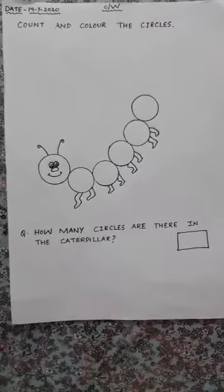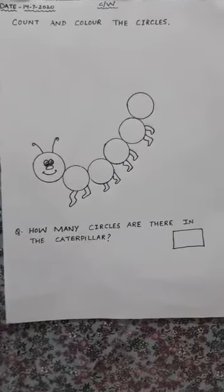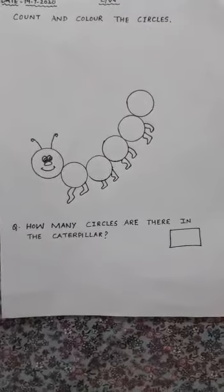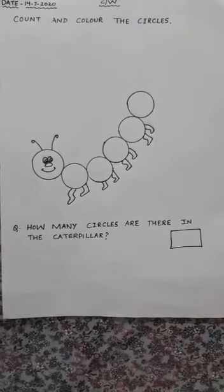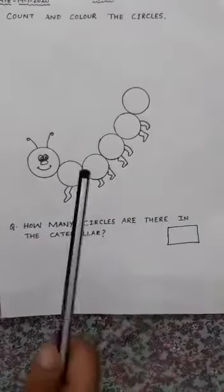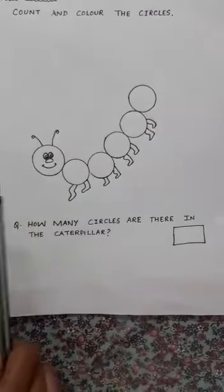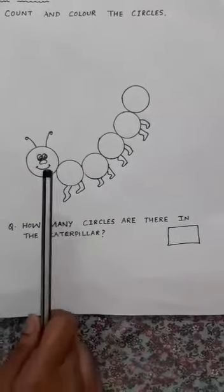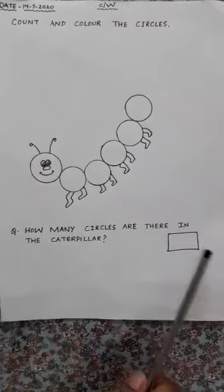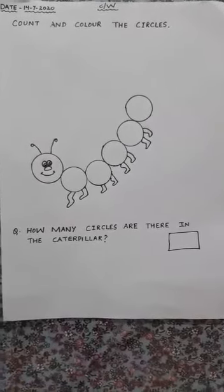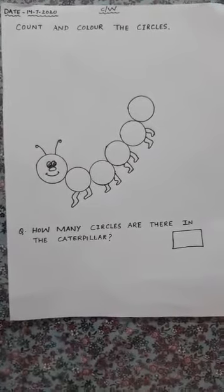और फिर क्या करोगे आप? Then you are going to color these circles. Then आप यह circles को color करोगे. And हम कौन से color से करेंगे caterpillar को? We will color the caterpillar with green color, ठीक है? Because caterpillar green color का होता है. तो आपको caterpillar को green color से color करना है, और circles count करके यहाँ पे इस box में लिखोगे. चलो, now finish the worksheet — this is your classwork, okay?